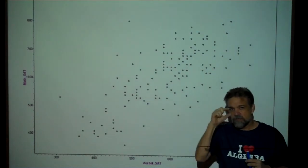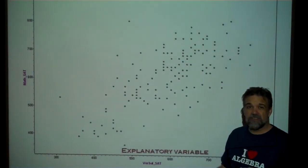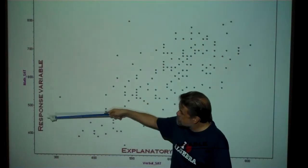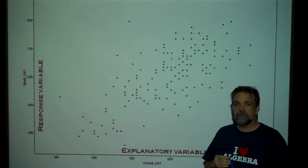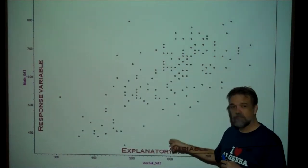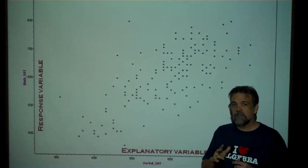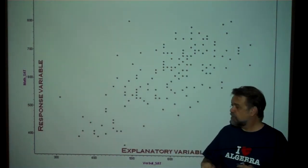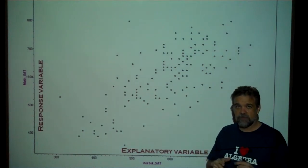So instead of looking at all this data, we'll come up with a few numbers to describe it. Let's get some vocabulary down. The x variable is called the explanatory variable, and the y variable is called the response variable. The reason we have these terms is that with bivariate data, we want to look at predictions — if I know the value of my explanatory variable, how well can I predict the response variable? Unlike in algebra, we do not talk about independent and dependent variables. We say explanatory and response, and we don't talk about whether one is causing the other.